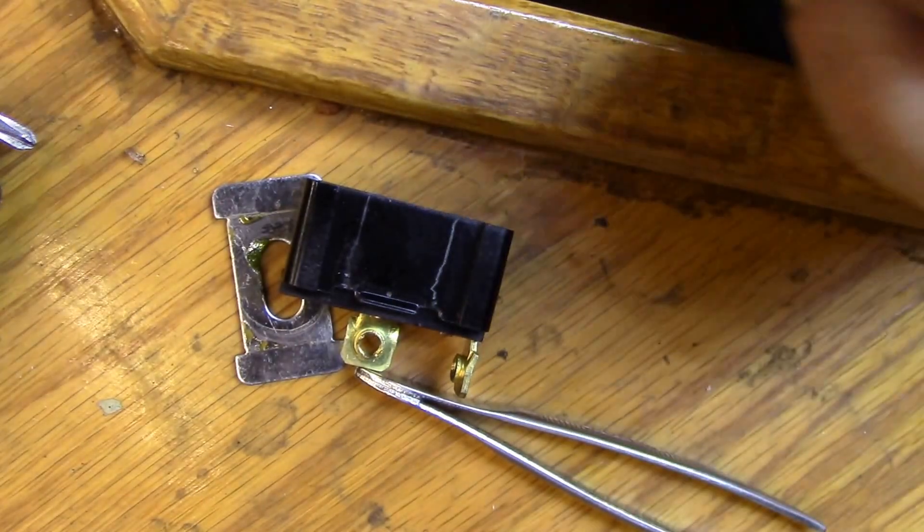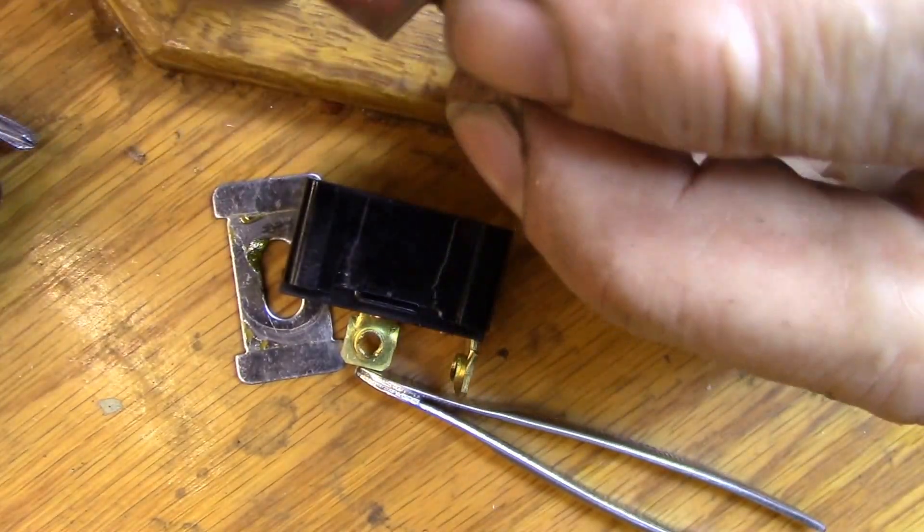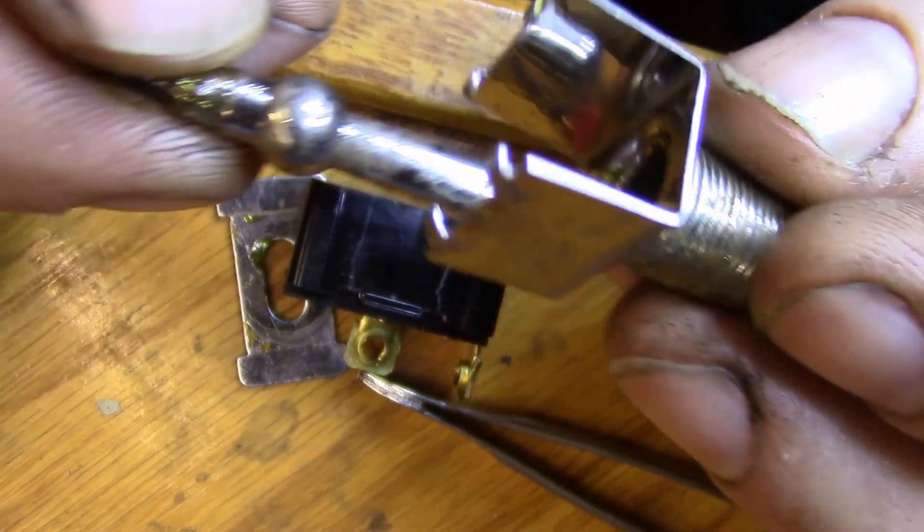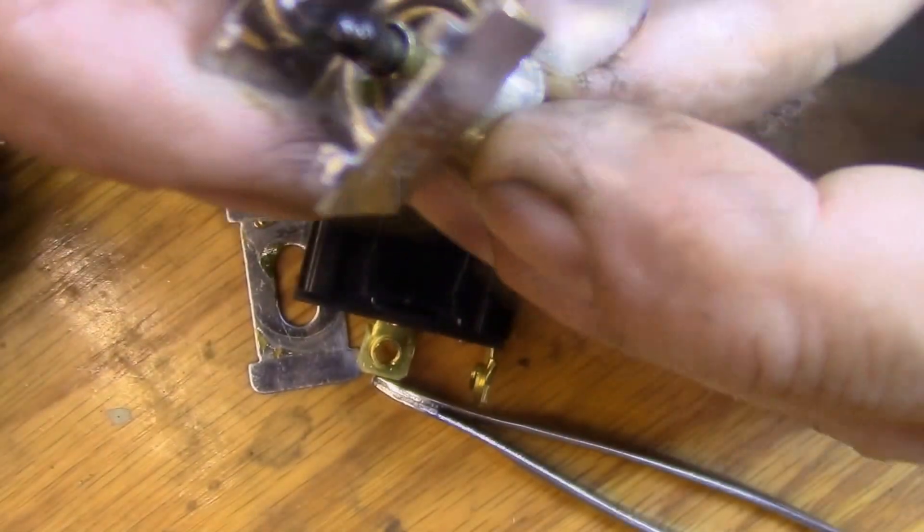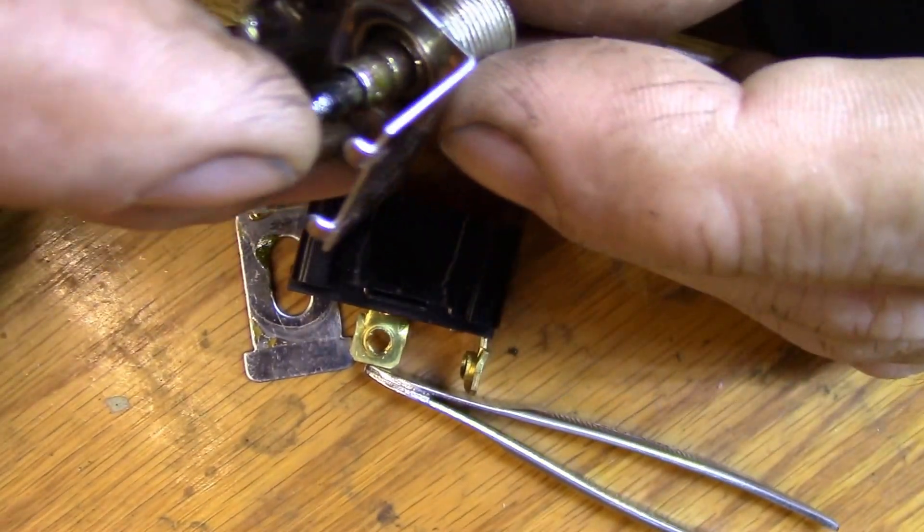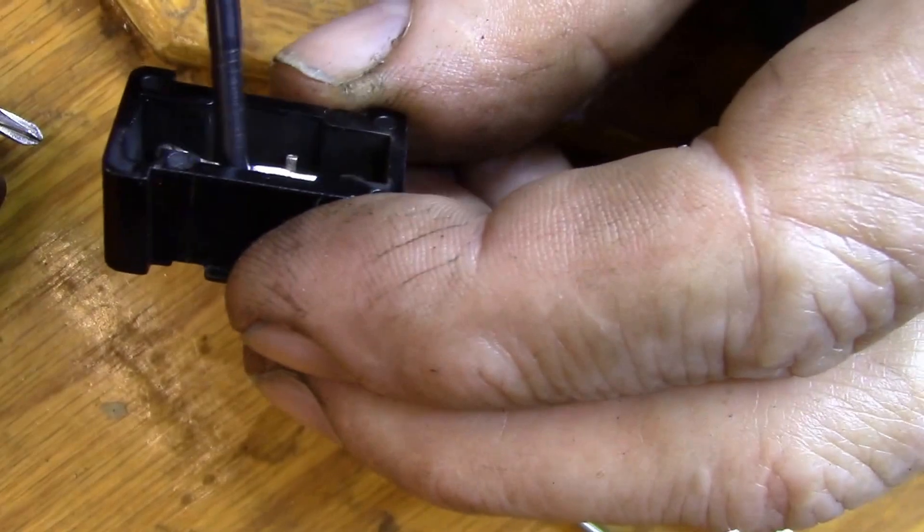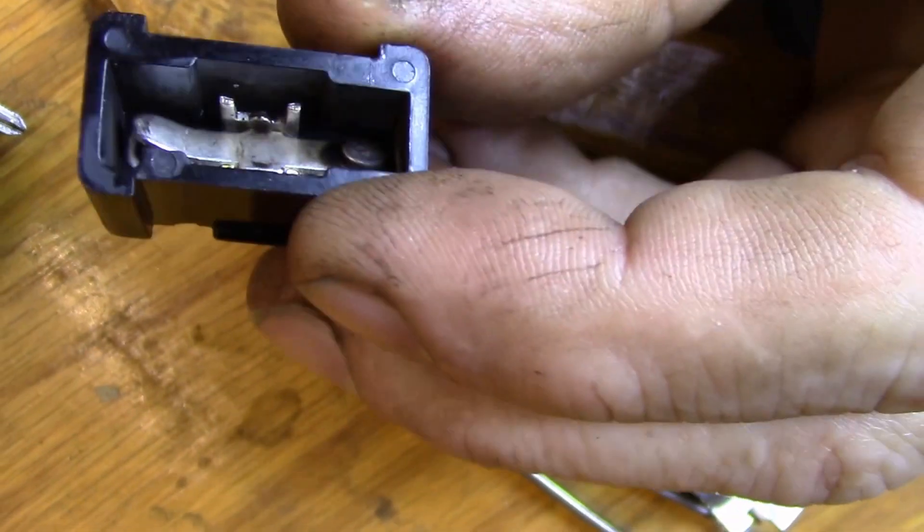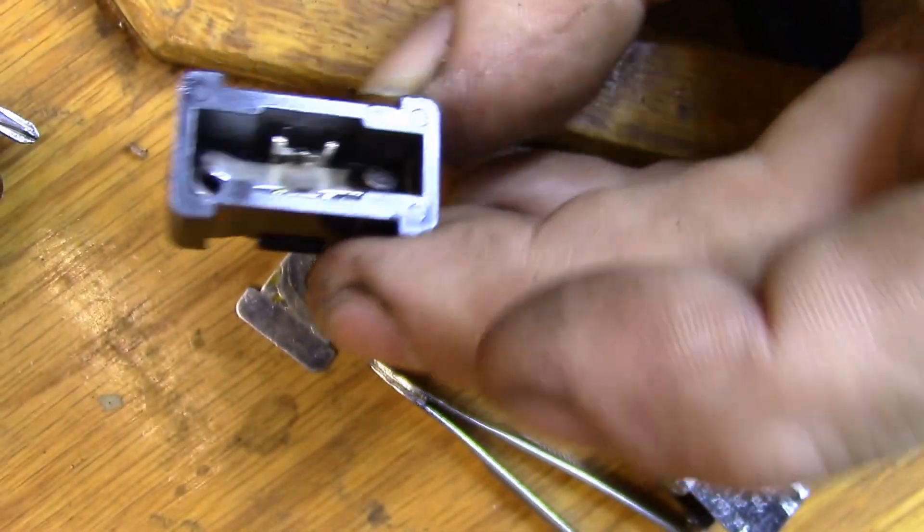I've never torn one apart to see how one of these work. They're pretty simple. You just have this kind of pivot, there's your toggle, there's a little ball that fits up in there, and then there's just a little spring-loaded pin on there. All an over-center type of lever. That's a pretty cool little design.